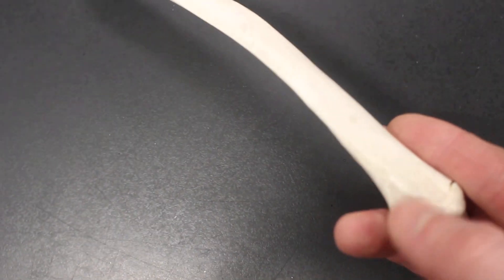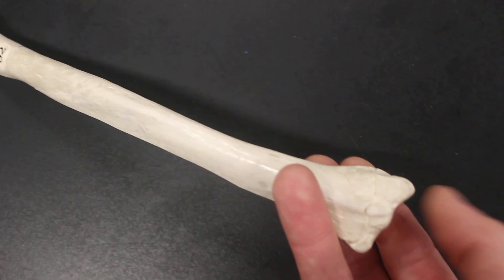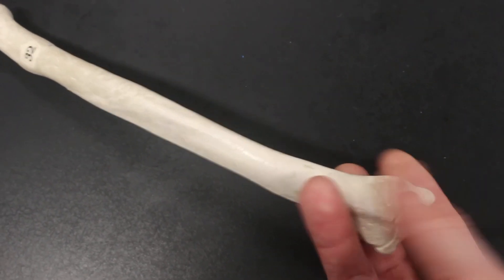And then at the very distal end, we have this smooth area here for the ulna. That's called the ulnar notch. And at the other side, we have this point sticking down. That is the styloid process.